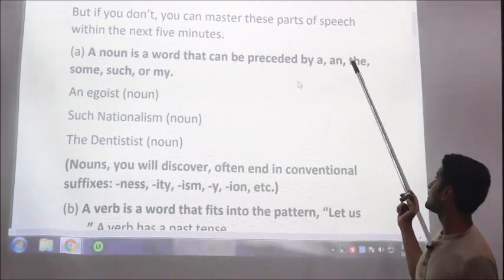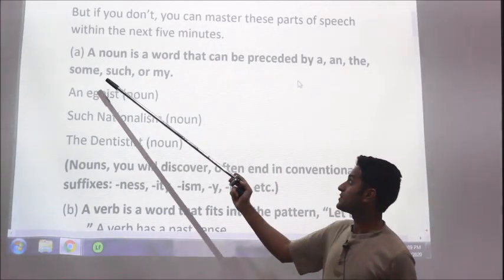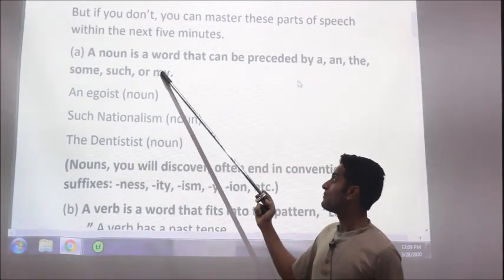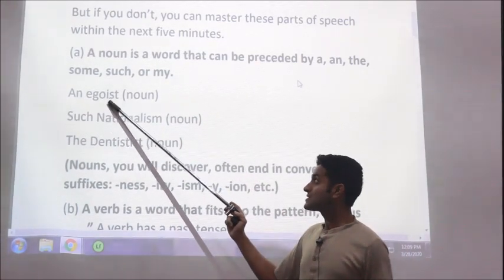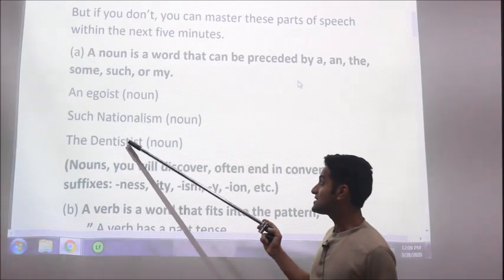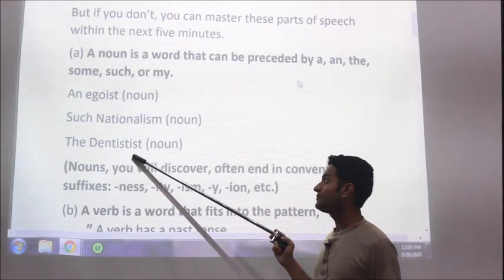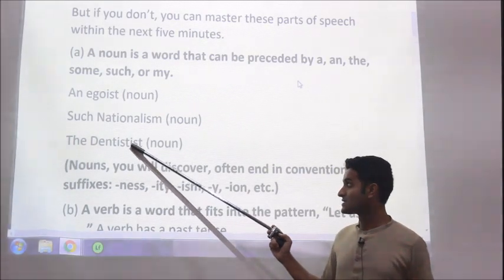These articles a, an, the and after them the noun will come, and these determiners some, such, my and after them the noun will come. Examples: an egoist, such nationalism, the dentist. Well, the spelling here is wrong, the spelling is D-E-N-T-I-S-T, dentist.